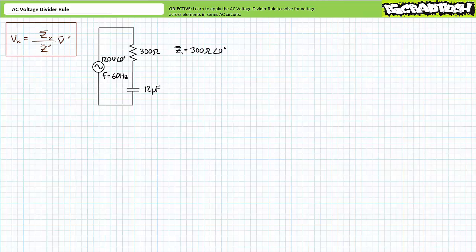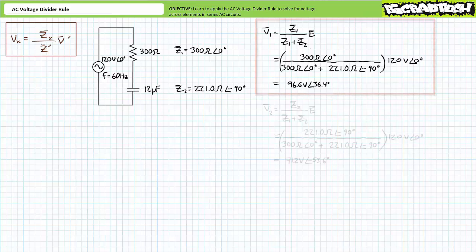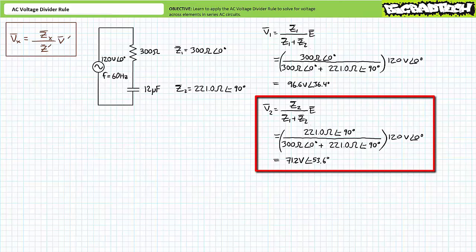The complex impedance of the 300 ohm resistor is 300 ohms at an angle of zero degrees — call this Z1. The complex impedance for the 12 microfarad capacitor at 60 hertz is 221 ohms at an angle of negative 90 degrees — call this Z2. The AC voltage divider rule solving for V1 suggests that V1 equals Z1 divided by (Z1 plus Z2) times source voltage E. Substituting in our given values yields V1 to be 96.6 volts at an angle of 36.4 degrees.